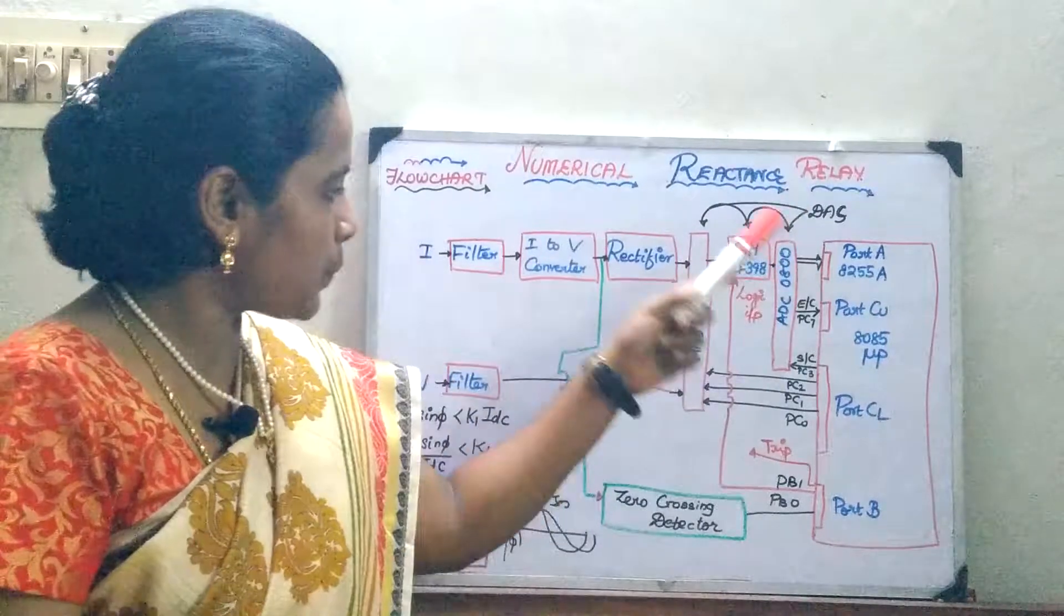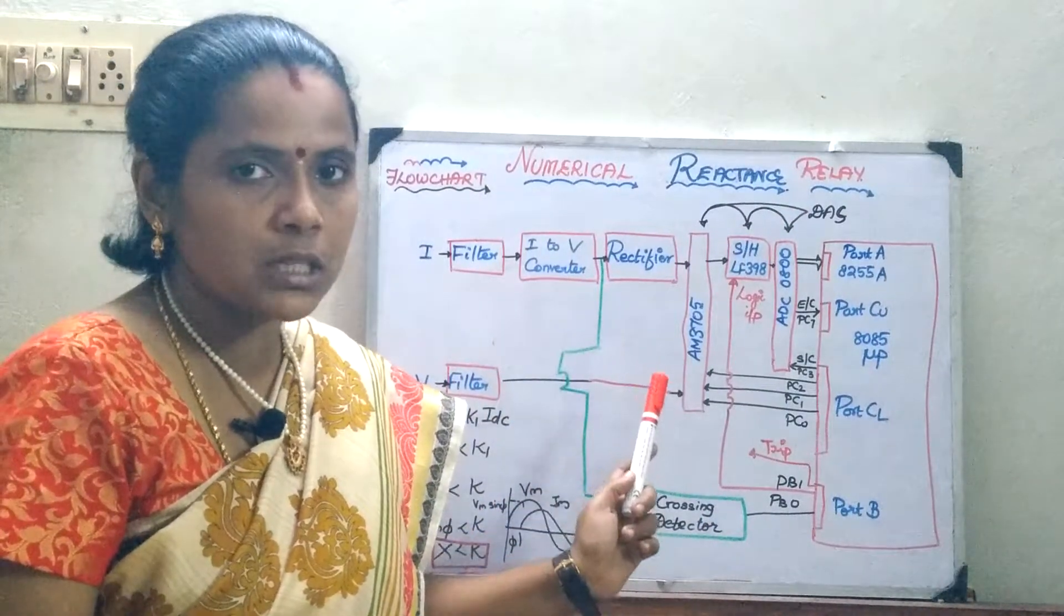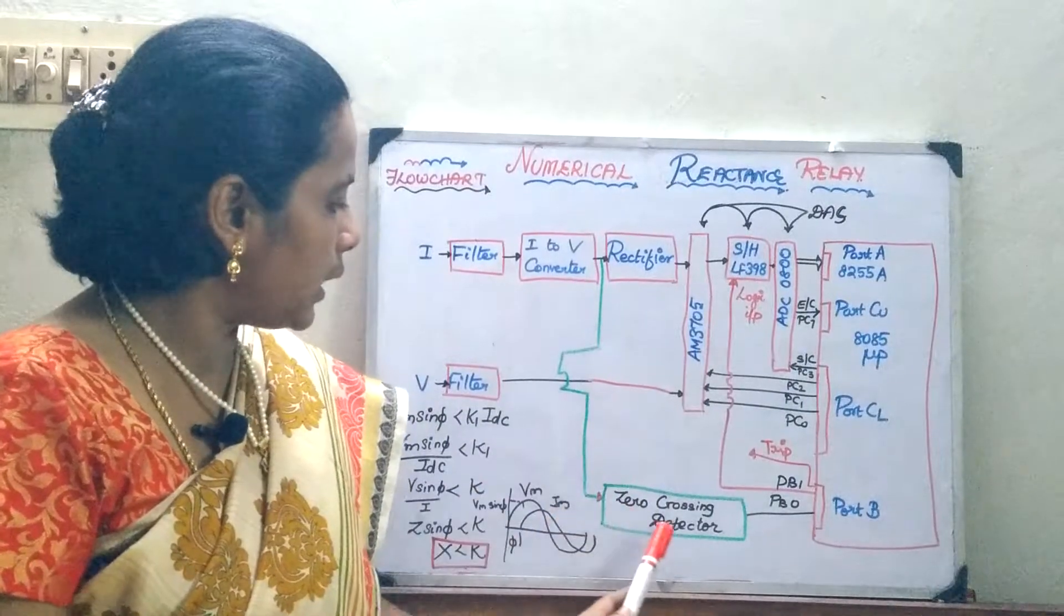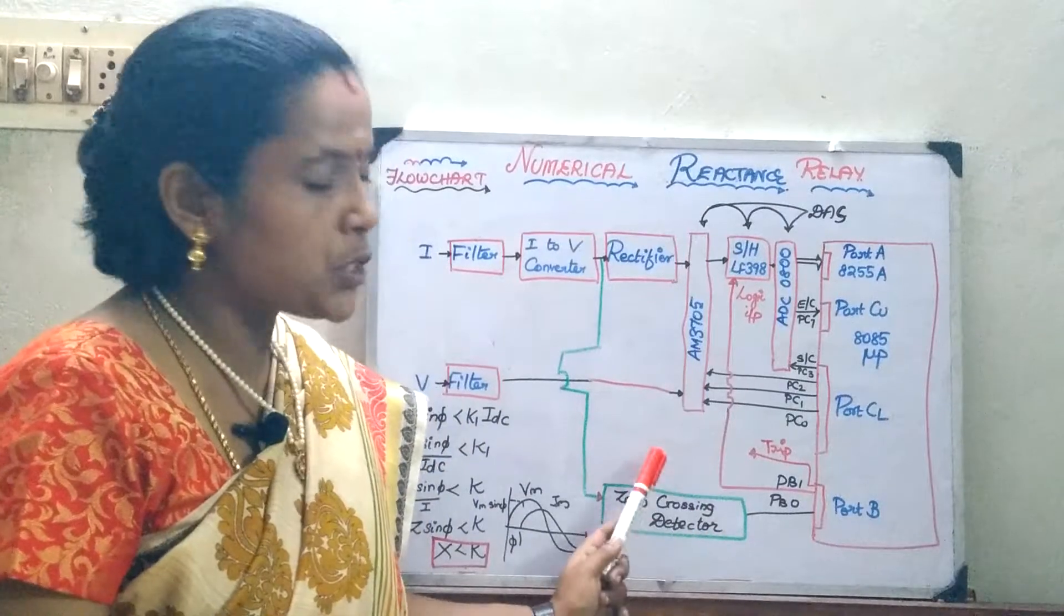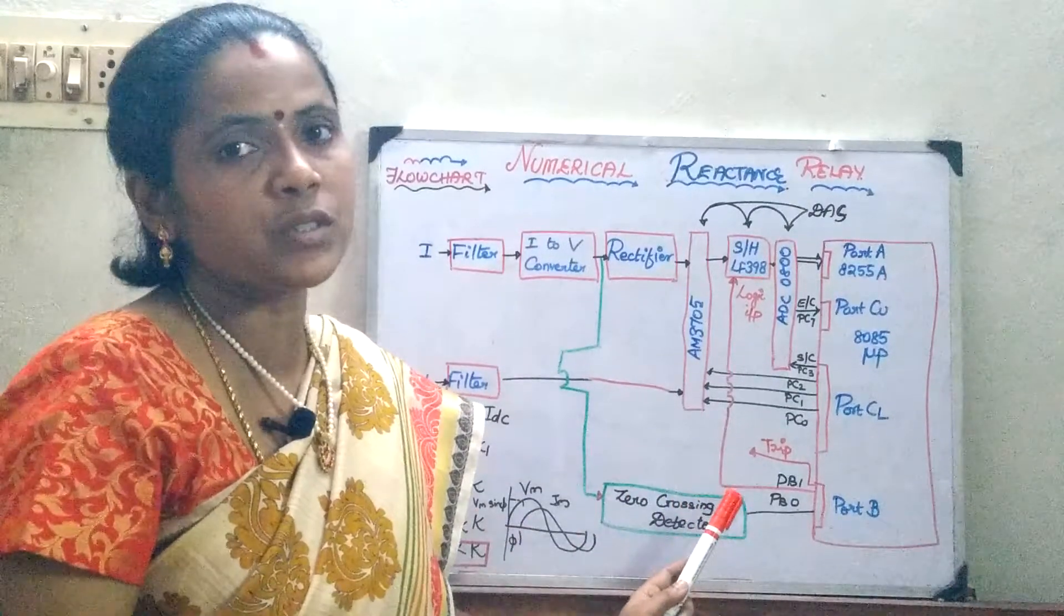Here, with respect to your circuit diagram, only small modification is made, that is, you are connecting a zero crossing detector here. So, why I am saying this small modification, so that you can compare the circuits and learn.